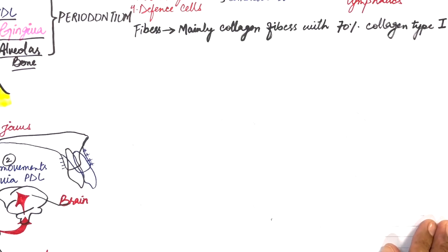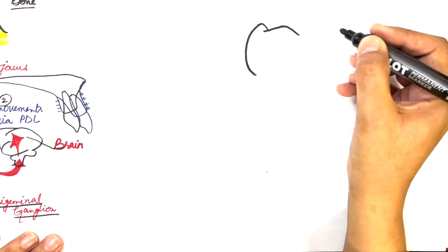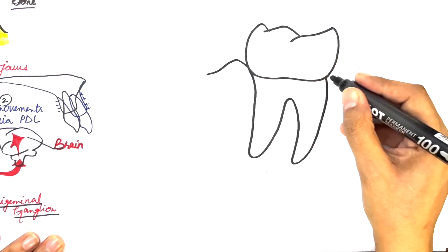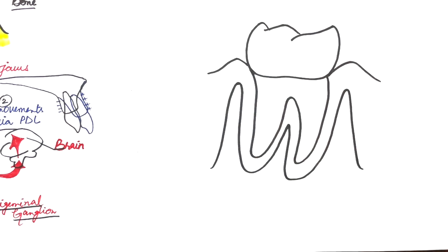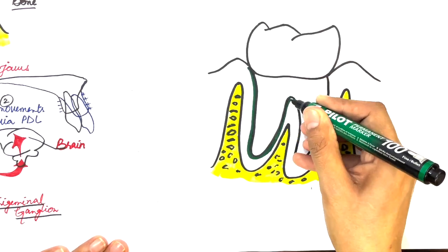The collagen fibers are arranged in the form of definite bundles. These collagen fiber bundles are arranged in groups that can easily be seen under a light microscope. Those bundles running between the tooth and bone represent the principal fiber bundles of PDL.